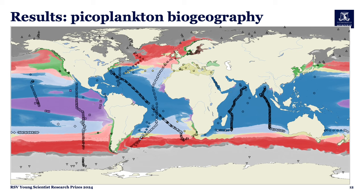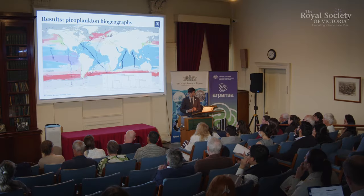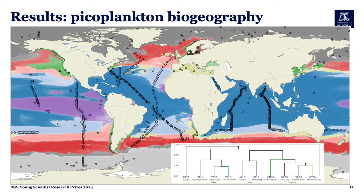We have three categories of provinces: tropical provinces shown in blue, light blue, and purple; polar provinces in dark gray for the Arctic and light gray for the Antarctic; and temperate provinces shown in red, pink, green, and yellow. You can also see their relationships in the clustering dendrogram. A unique finding from our study was that the Baltic Sea comprises a unique province, which emerges as an outgroup in our clustering analysis.